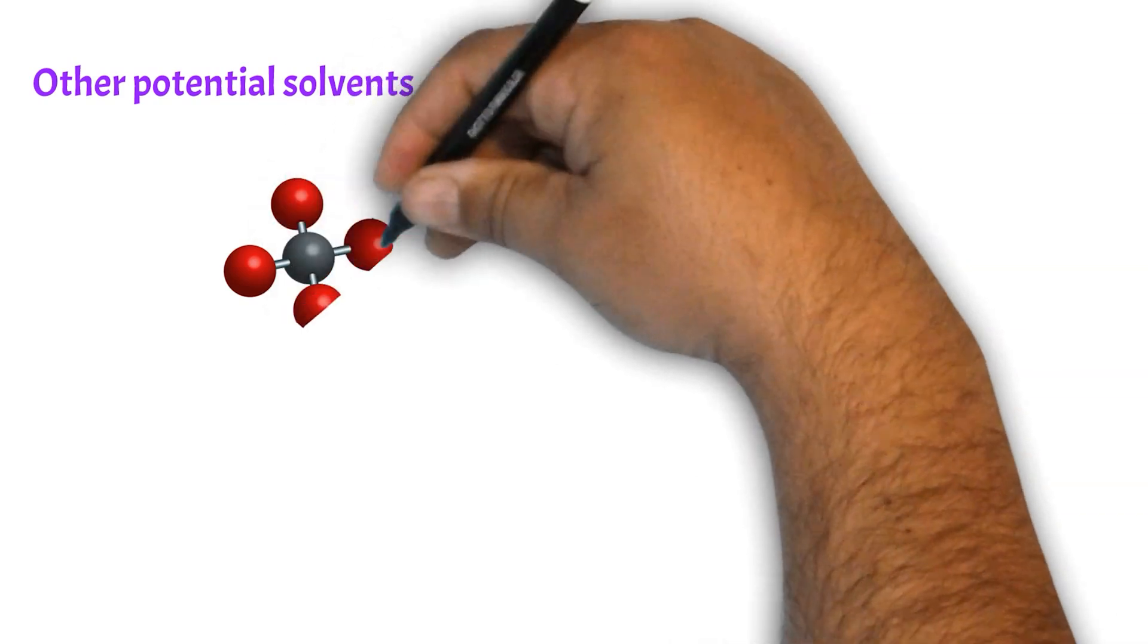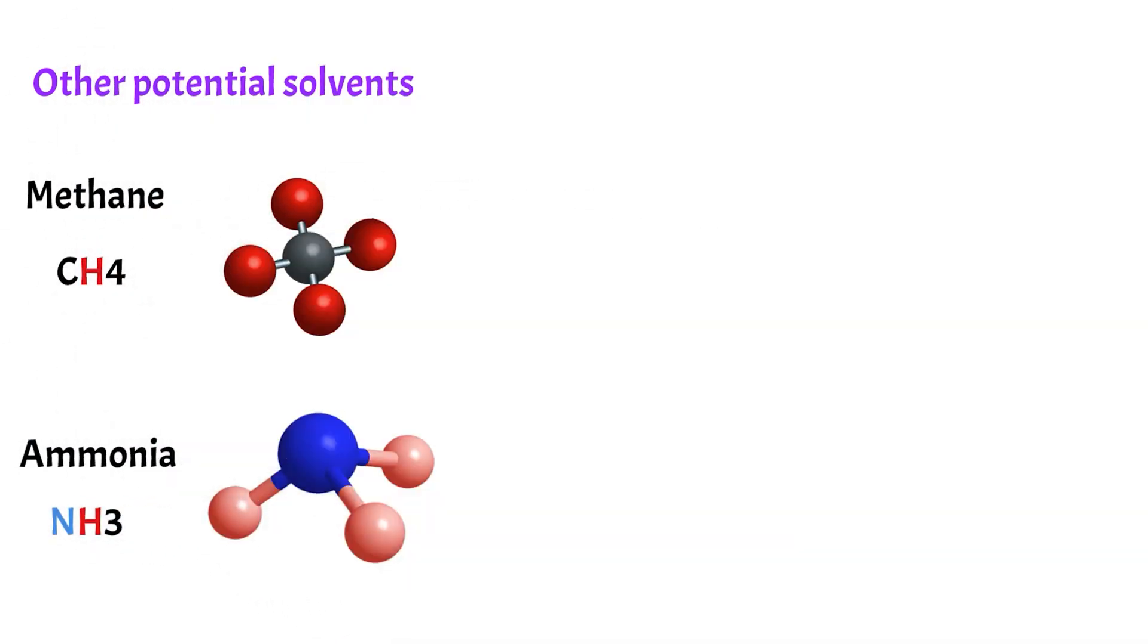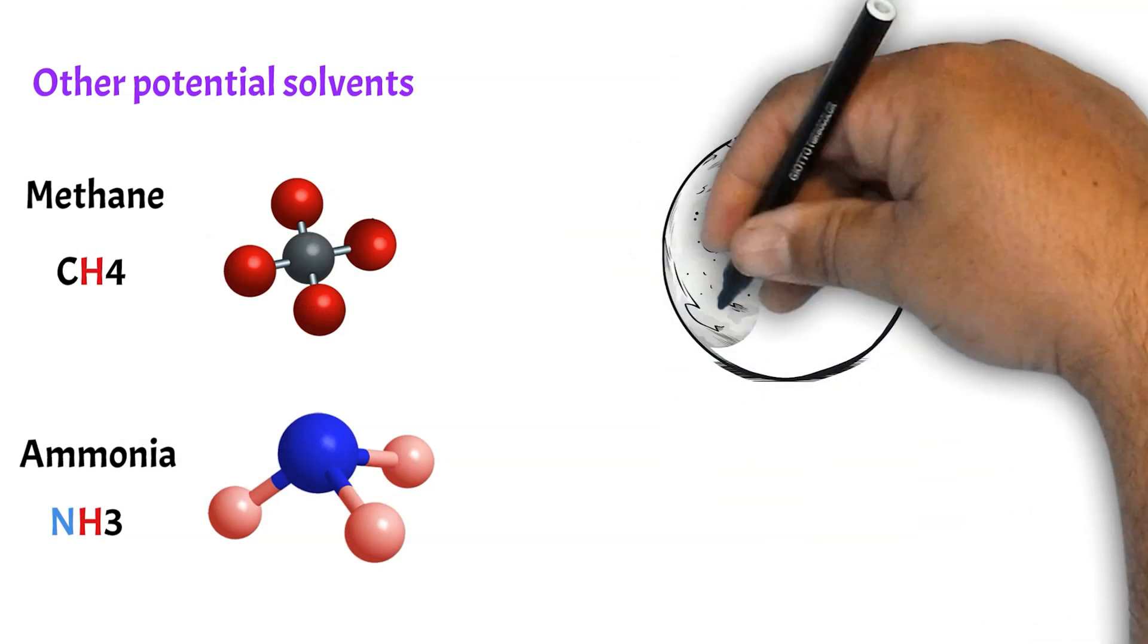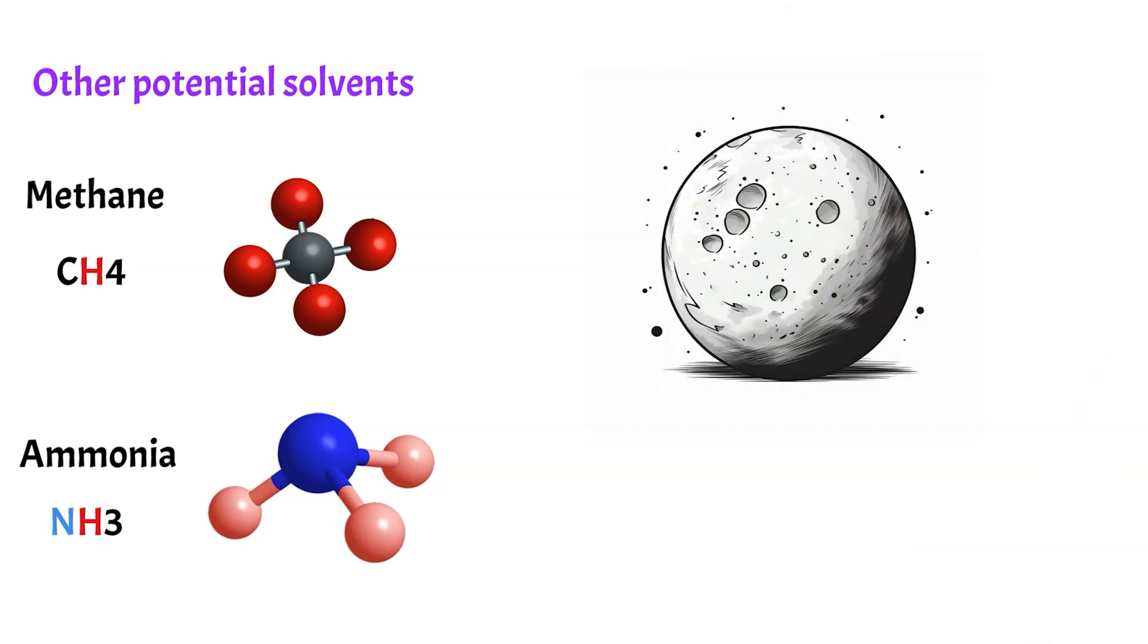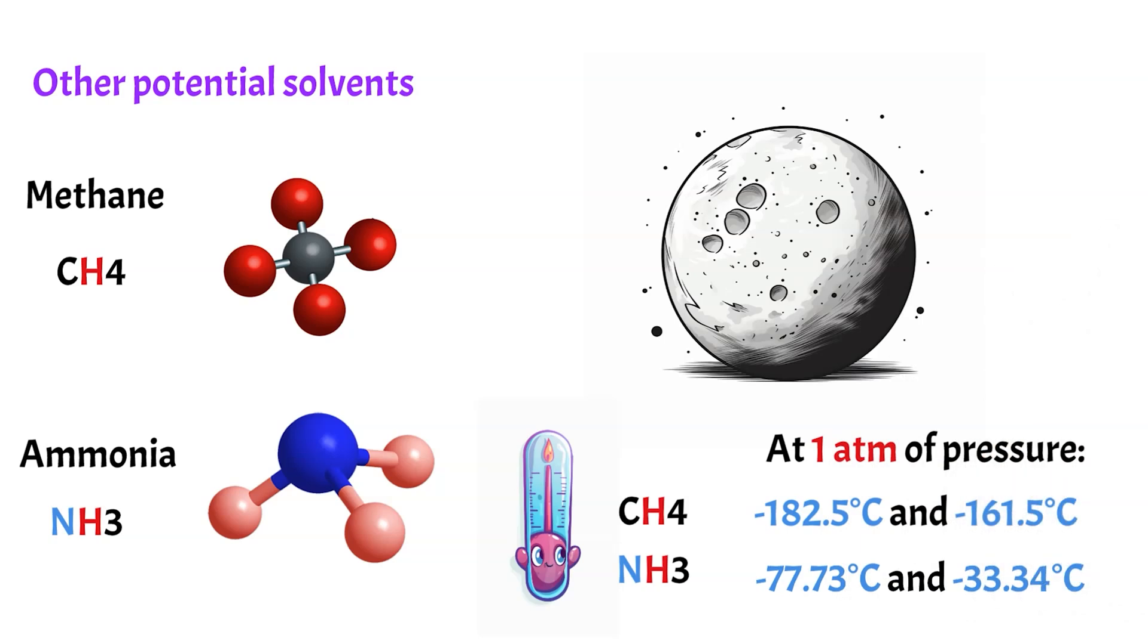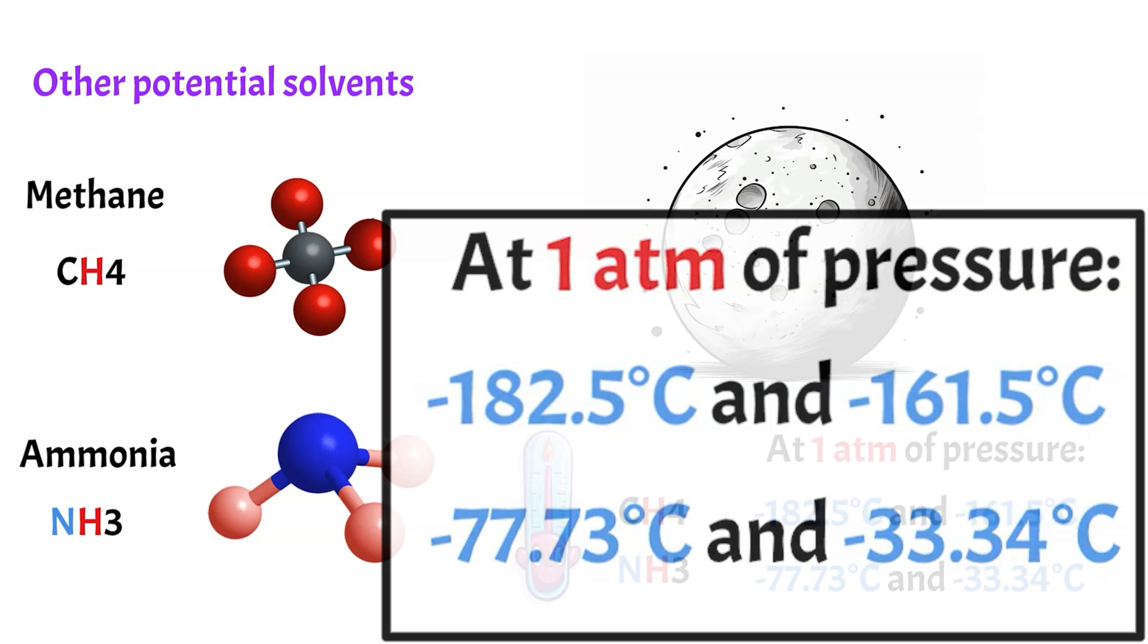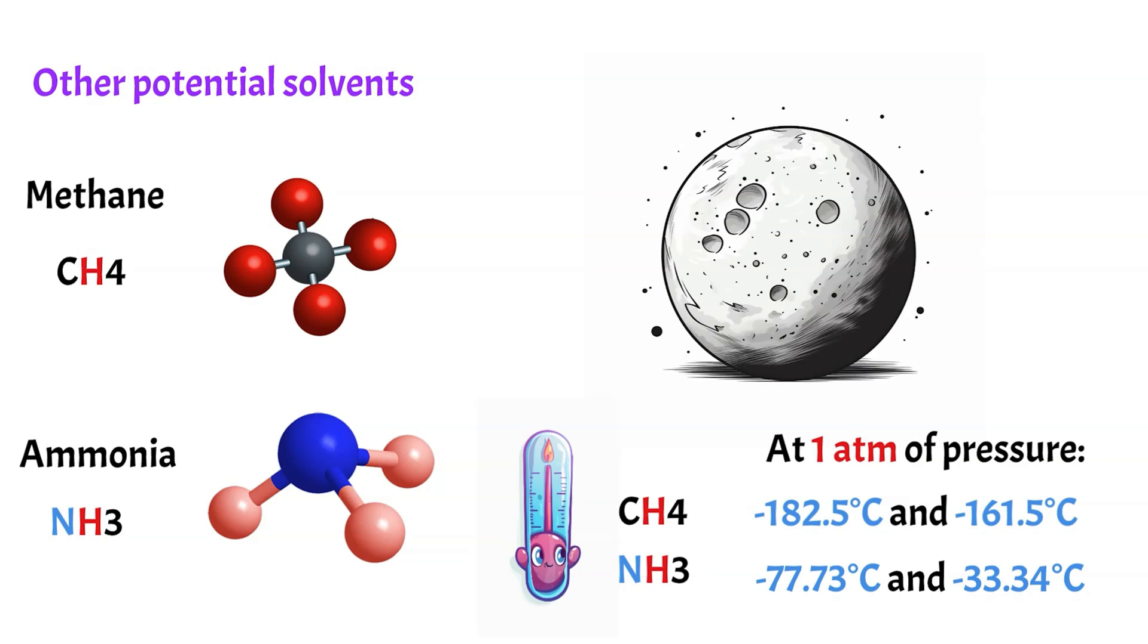Theoretically, liquid methane or liquid ammonia could act as a solvent for biological life. On our planet, they are naturally found as gases. However, temperatures on some moons or planets are cold enough to have these chemicals in liquid form. But practically speaking, planets or moons cold enough for methane or ammonia to be in liquid form would mean that any biological reaction that took place would be extremely slow, which limits the probability and degree to which life could evolve on them.